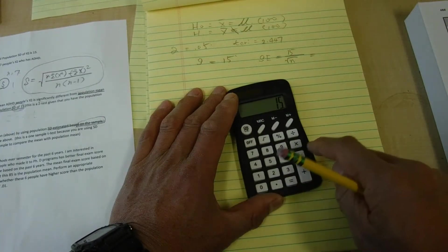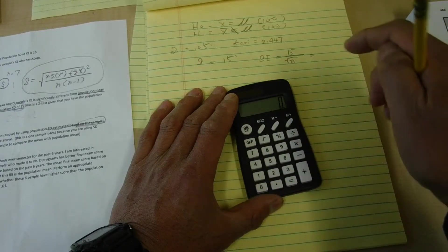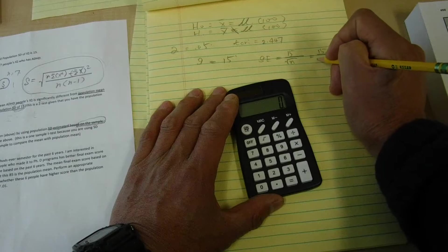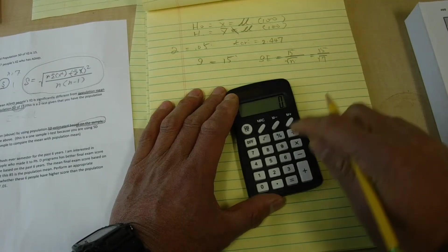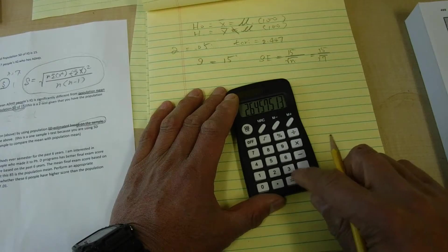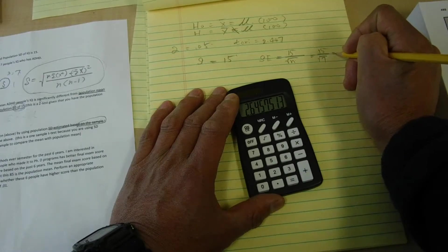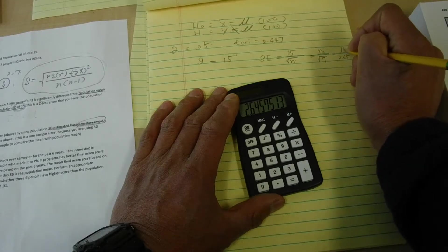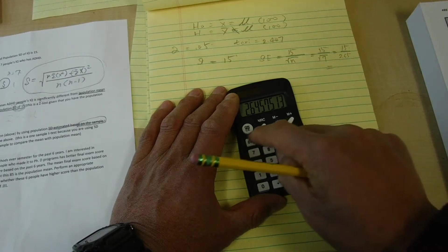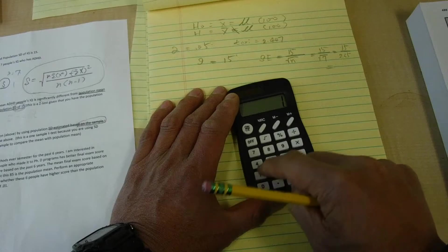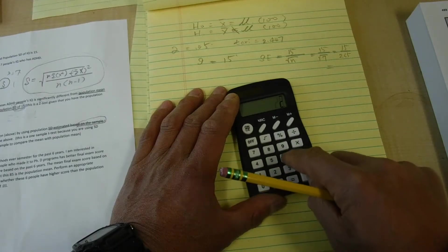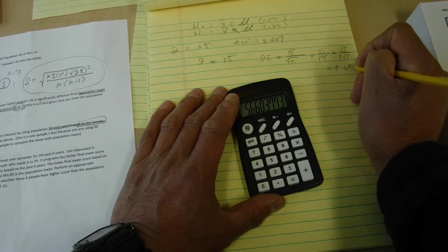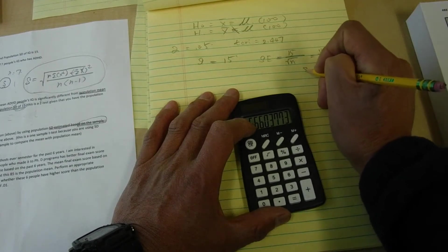15 divided by square root of 7. And 7 square root equals 2.64, 2.65. So 2.65, and it's 15. So this is your standard error.